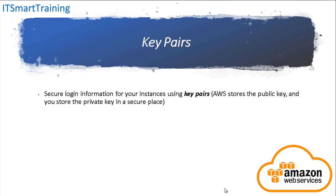Key pairs means we have two types of keys. If you have knowledge about cryptographic services, we have two types of keys: one is a public key and one is a private key. If we encrypt data with a public key, we have to decrypt it with the private key. Or if we encrypt the data with the private key, we have to decrypt it with the public key. Those are the rules.